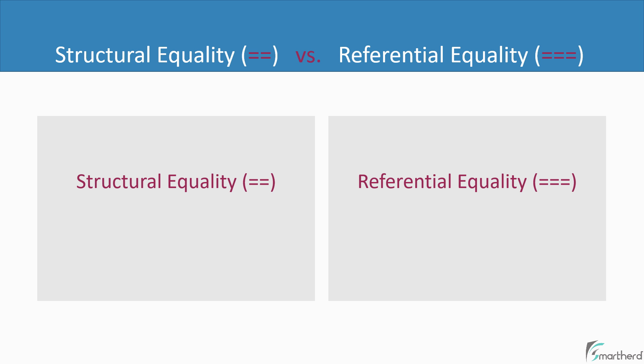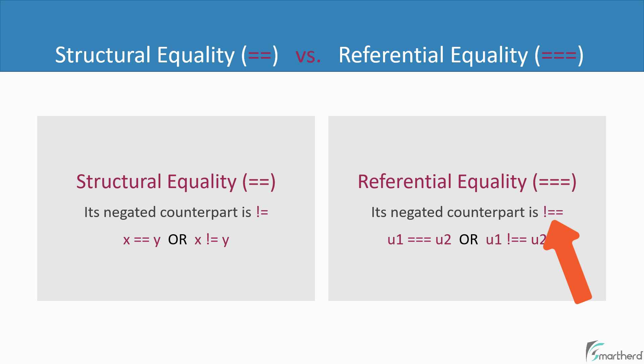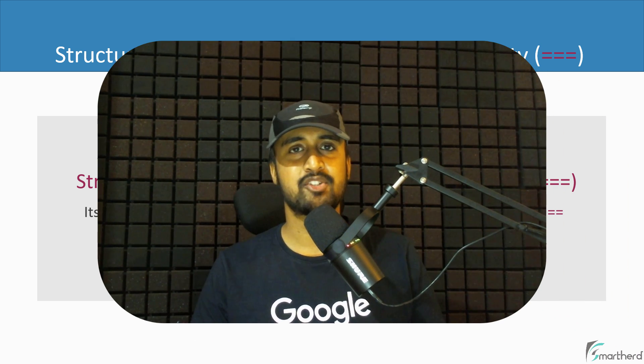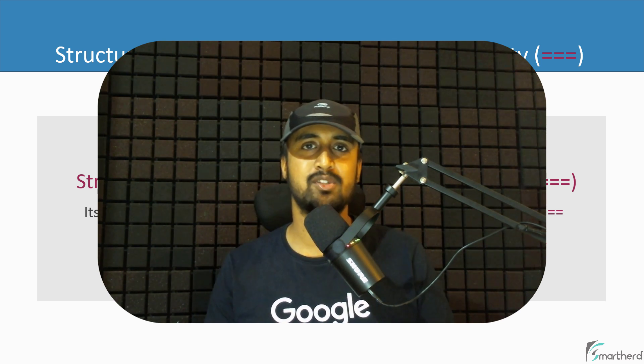Moving on to the last part of this video — what are the negated counterparts of these two operators? For structural equality, the negated counterpart is the not-equal-to operator (!=). For referential equality, the negated counterpart is the not operator followed by two equal-to symbols (!==). So in your code you use != or !== to negate the respective comparisons. After watching this video, you should know how to use structural and referential equality in your project.